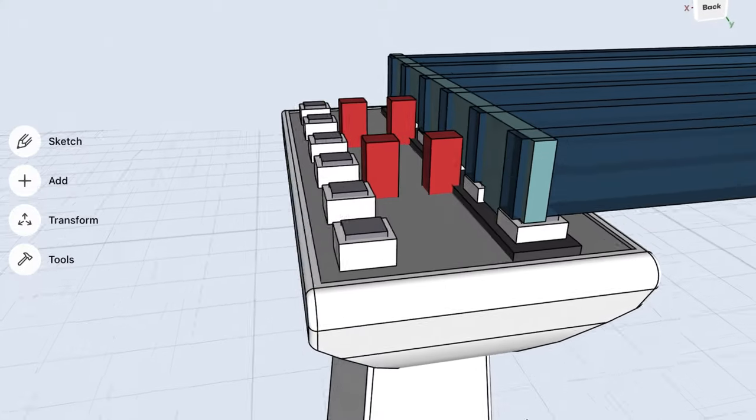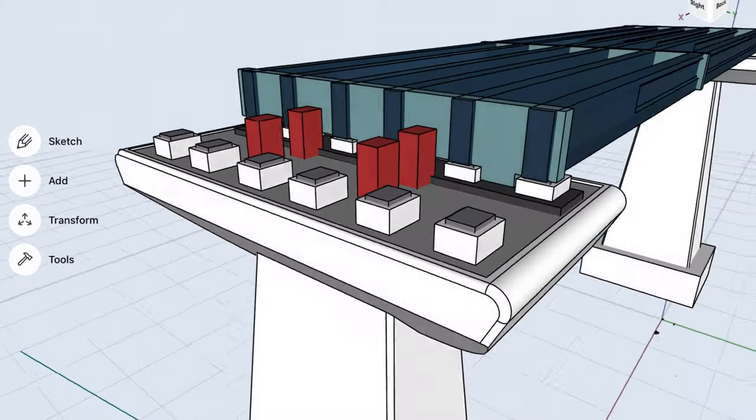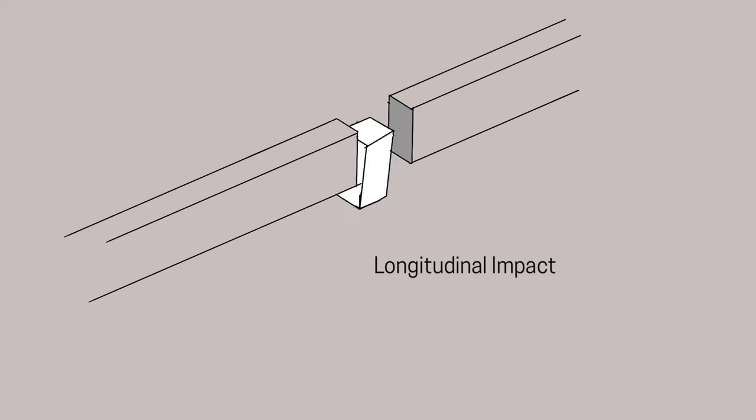The end diaphragm also transfers force to both the longitudinal arrestors simultaneously. This is how the longitudinal seismic arrestor behaves under impact of the diaphragm.